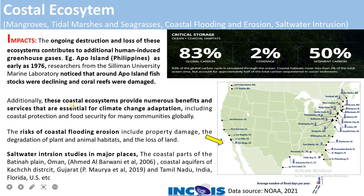These ecosystems provide not only carbon storage, but also numerous benefits and services essential for climate change adaptation, including coastal protection — they absorb a lot of wave energy when huge waves, tides, floods or sea level rise occurs, protecting the coasts — as well as food security for many communities globally.